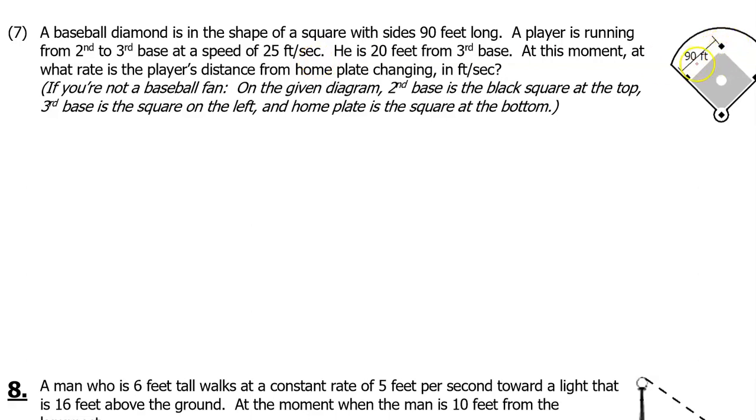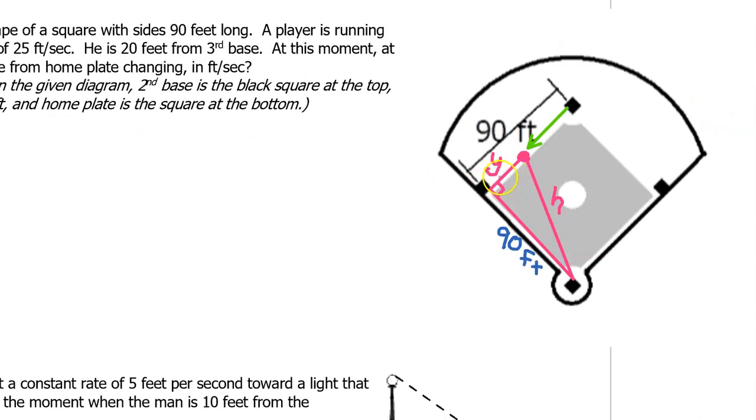A player is running from second to third base at a speed of 25 feet per second. This is second base, this is third base. He is 20 feet from third base. At this moment, at what rate is the player's distance from home plate changing in feet per second? This is home plate down here. Let's put some variables on the diagram so we can write some equations later. This dot represents the position of the player who's running in this direction from second base towards third base. Let's call the distance from the player to third base y, and let's call the distance from the player to home plate h.